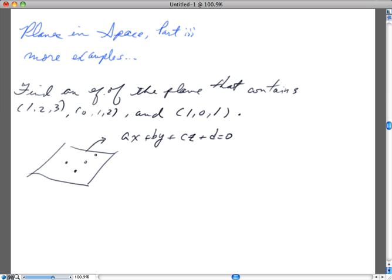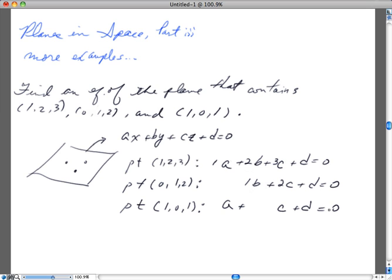When you do that, for point (1,2,3), when you plug it in, you get 1A + 2B + 3C + D = 0. When you plug in point (0,1,2), we get 1B + 2C + D = 0. When you plug in point (1,0,1), we end up with A + C + D = 0.